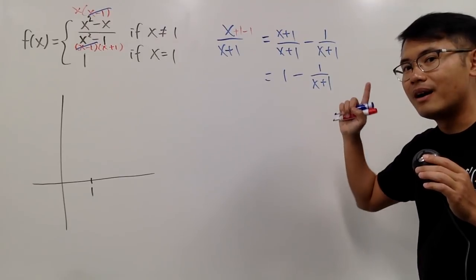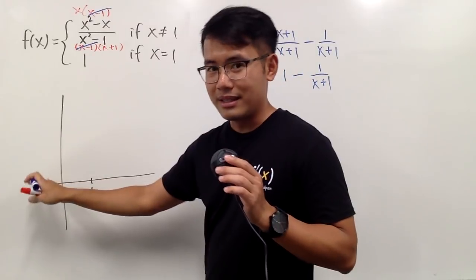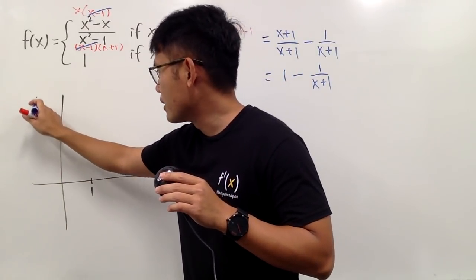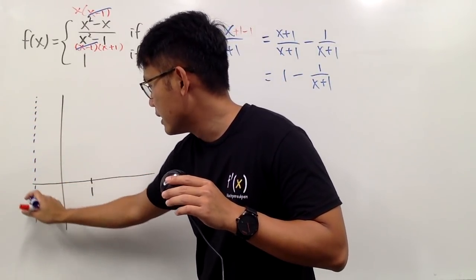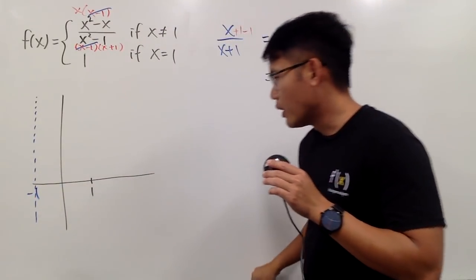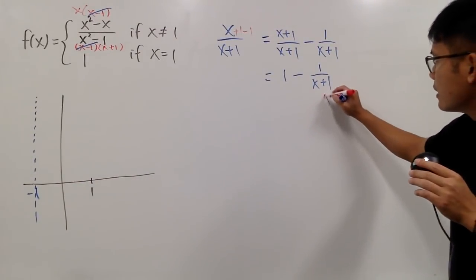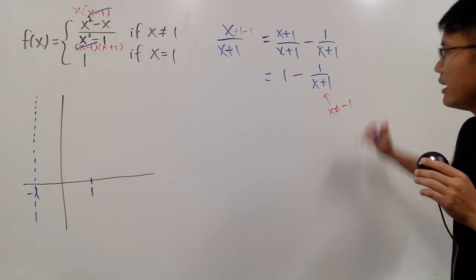So you should recognize how to graph 1 over x plus 1. We do have a vertical asymptote at negative 1. But this right here is actually on the other side. So let me just make a sketch right here for you guys. So here is x equals to negative 1, and we will have a vertical asymptote because, of course, we see that x right here cannot be negative 1.